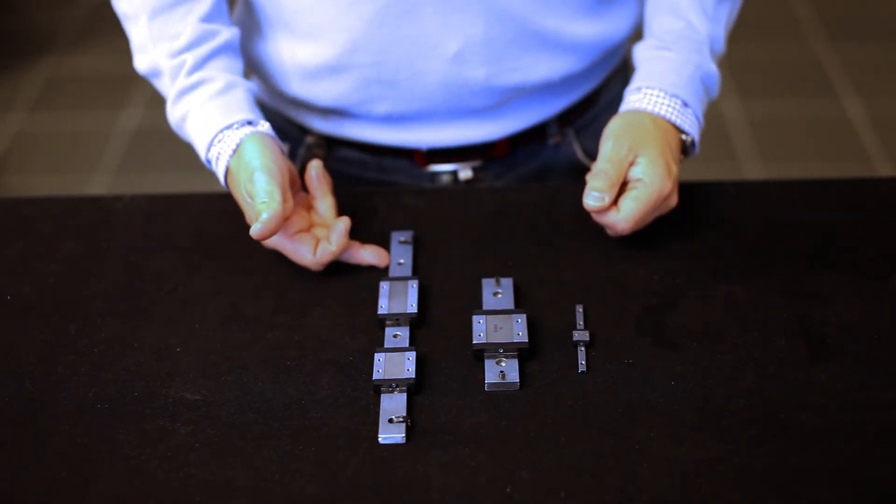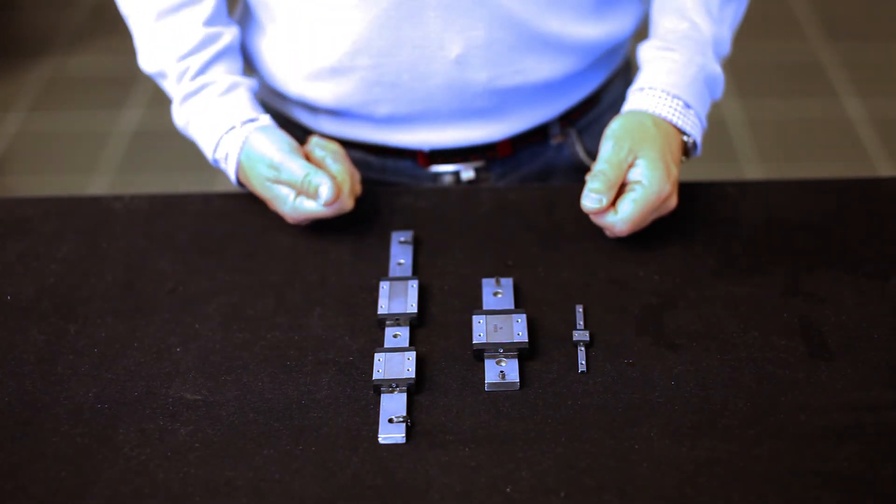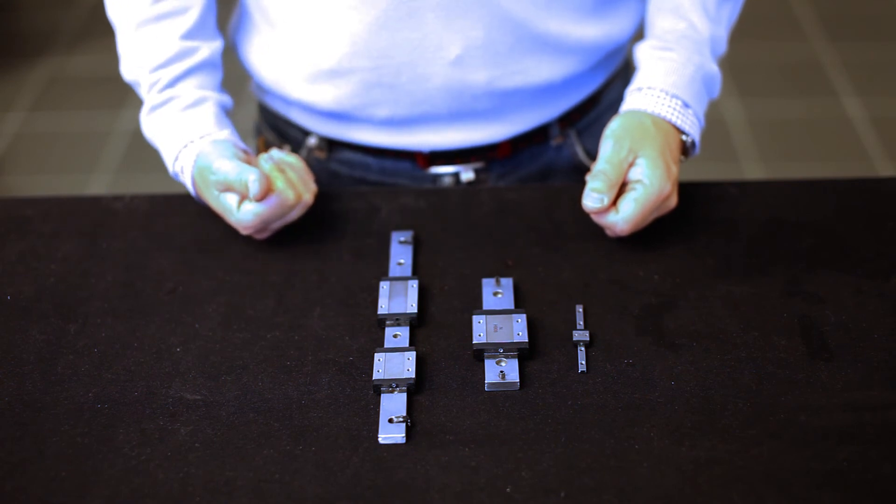You can also have countersunk mounting holes on the rail or bottom mounted rail with a thread and mounting from the bottom.